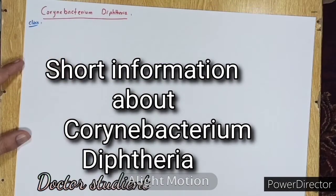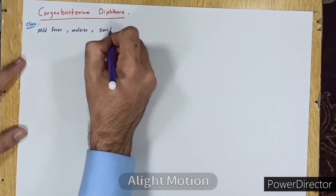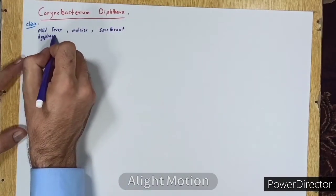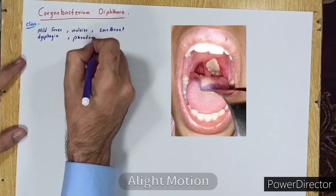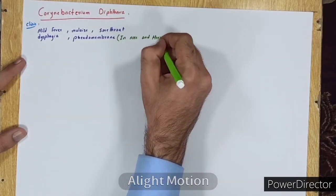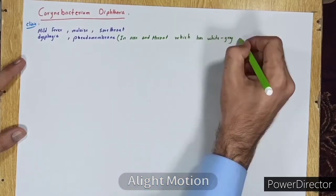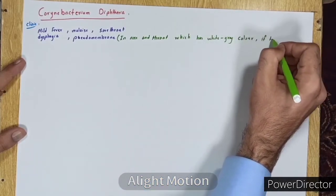Welcome to Doctor Student channel. Today we are going to talk about Corynebacterium diphtheriae. Clinical symptoms contain mild fever, malaise, sore throat, dysphagia, and pseudomembrane in nose and throat. There is white-gray color pseudomembrane. If you try to remove it, bleeding starts.